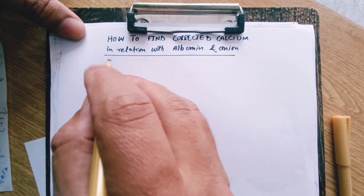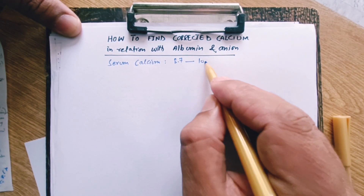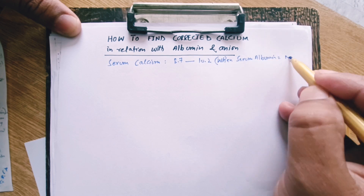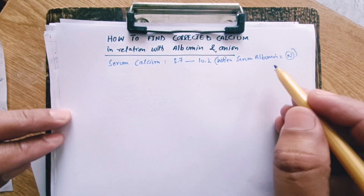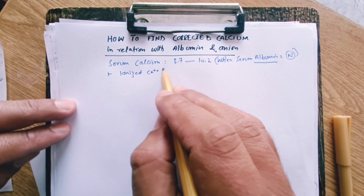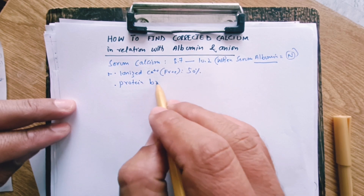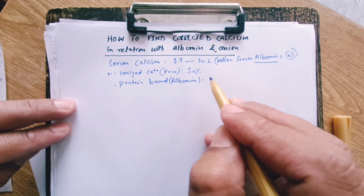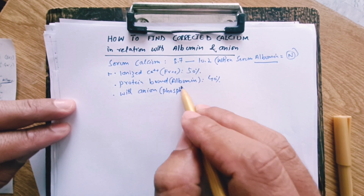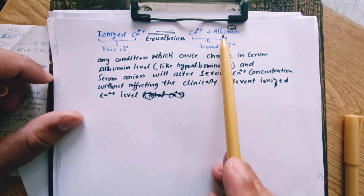How to find corrected calcium in relation with albumin and anion. The normal serum calcium is 8.7 to 10.2, but remember this applies when there is normal serum albumin, so serum albumin level is very important. Calcium is in ionized form — which can be called free calcium — at about 50%, bound with protein like albumin at 40%, and 10% can be bound with anions such as phosphate.